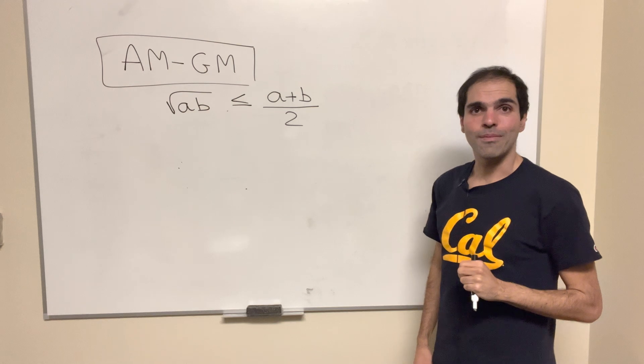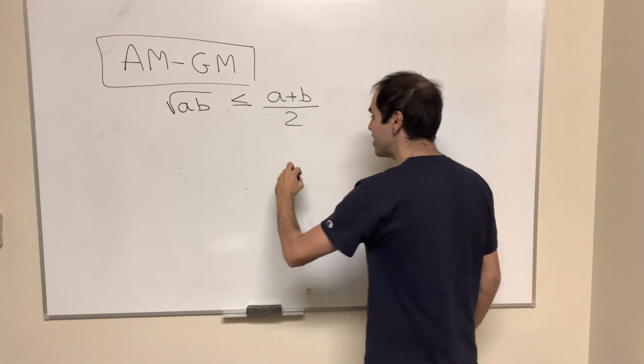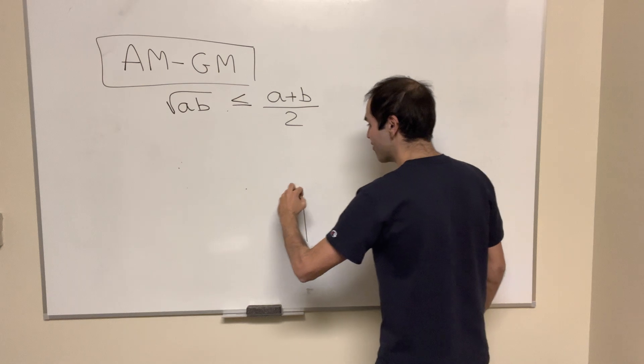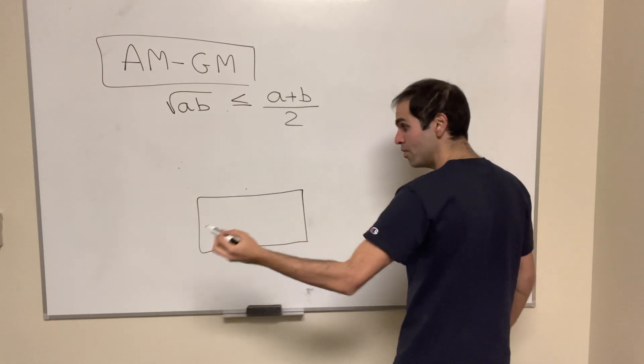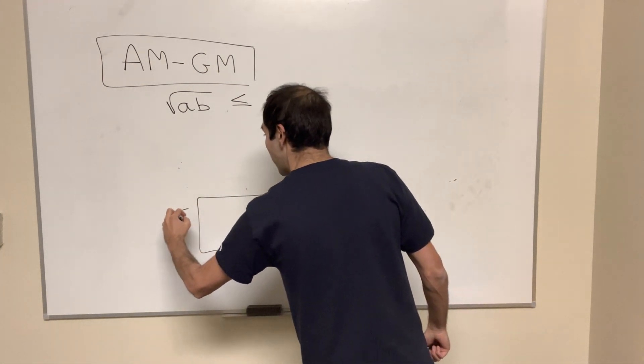At least in two dimensions. And here's a geometric derivation. Consider the following rectangle with sides square root of a and square root of b.